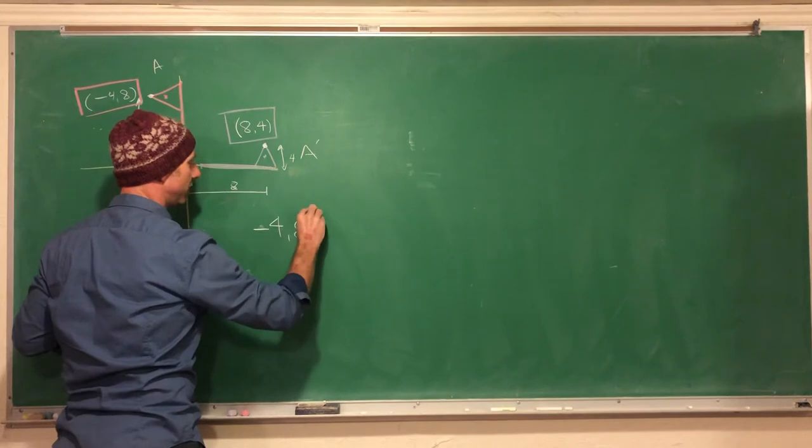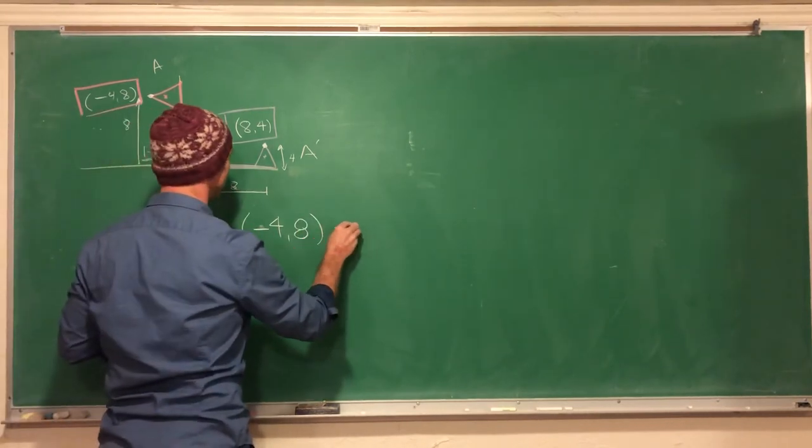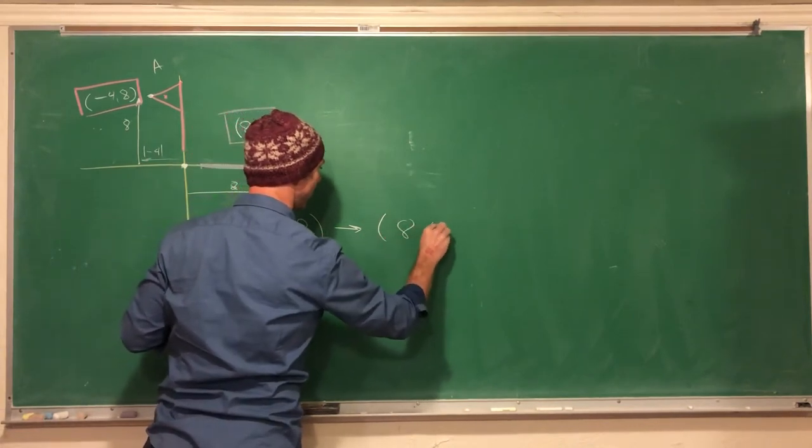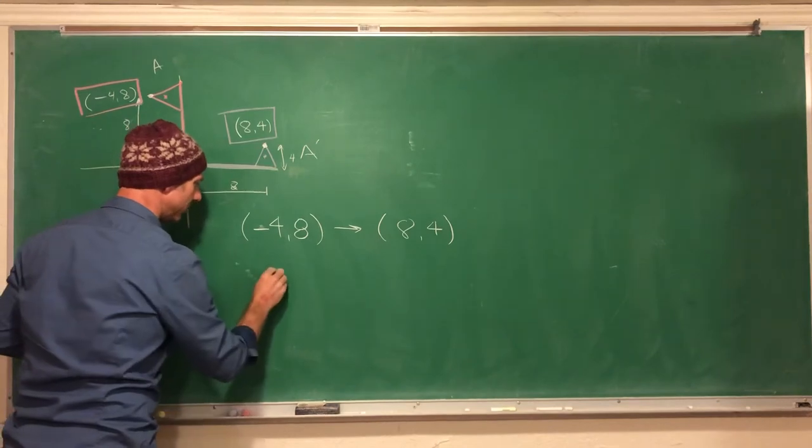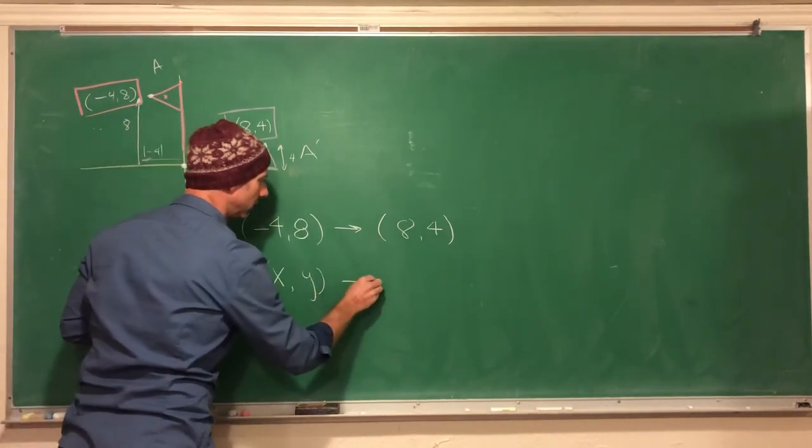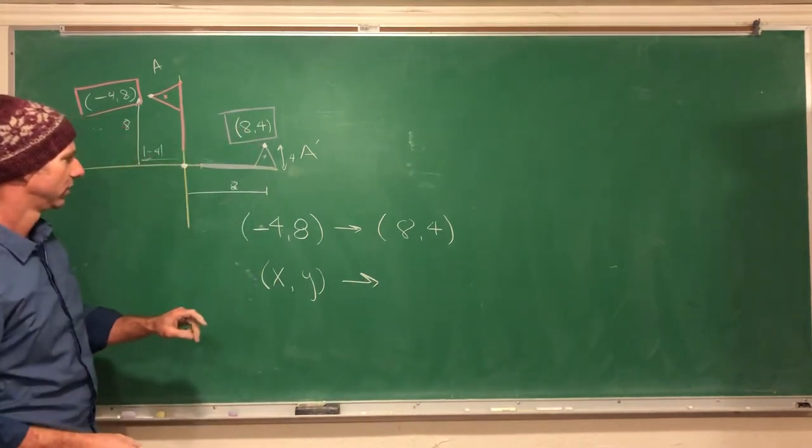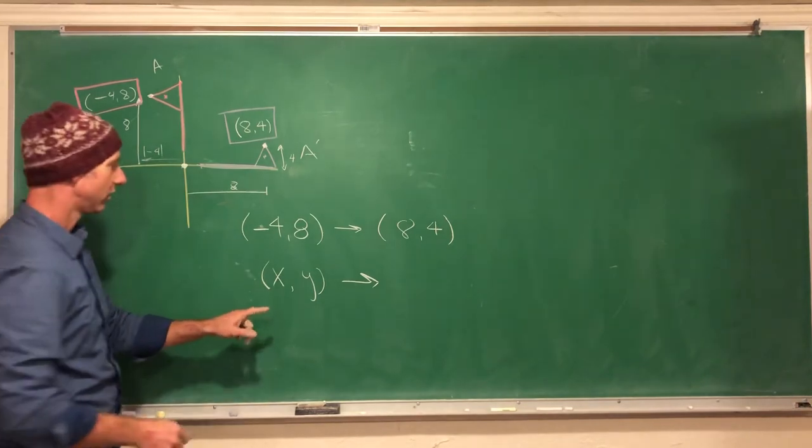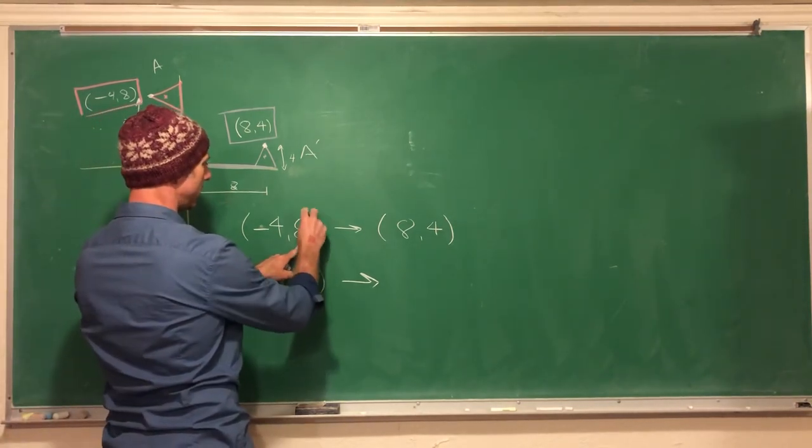It will be a different rule if I went 90 degrees about the origin the other way, or 180 or 270, which is three quarters the way around. So let me start this way instead: negative four, eight went to eight and four. Let's not forget this is x, y. See what happened here?